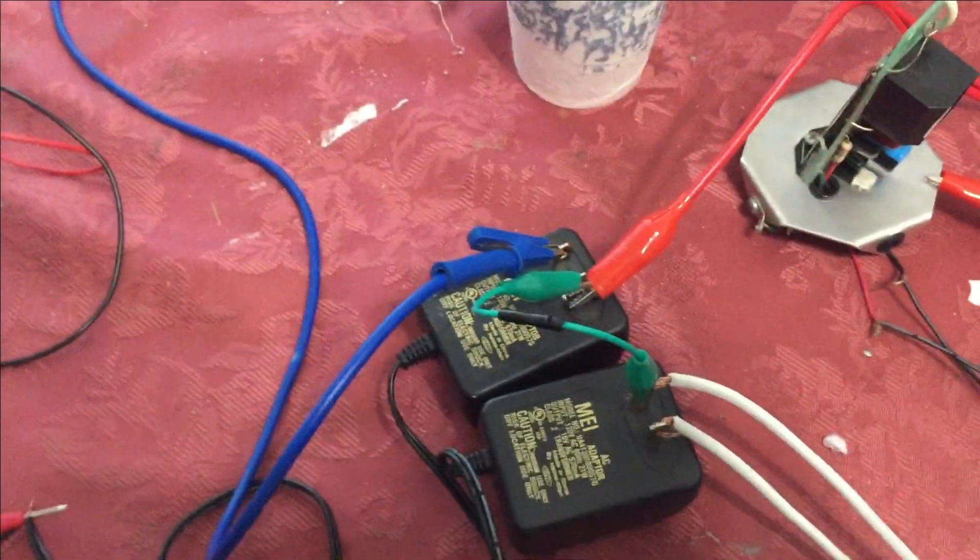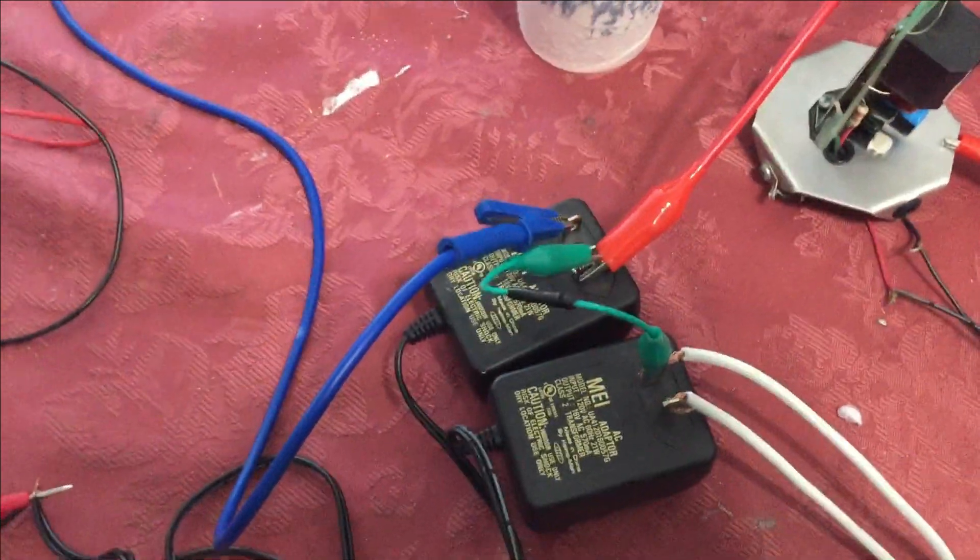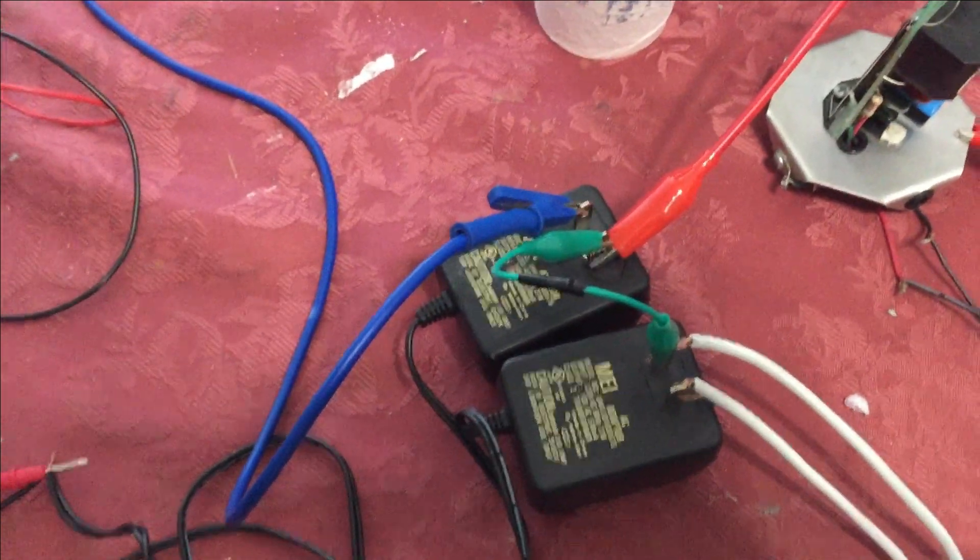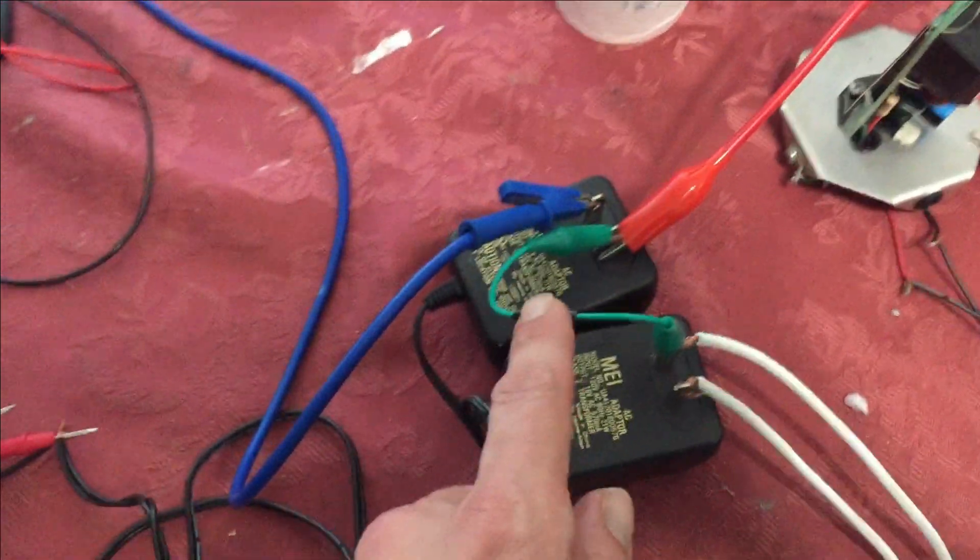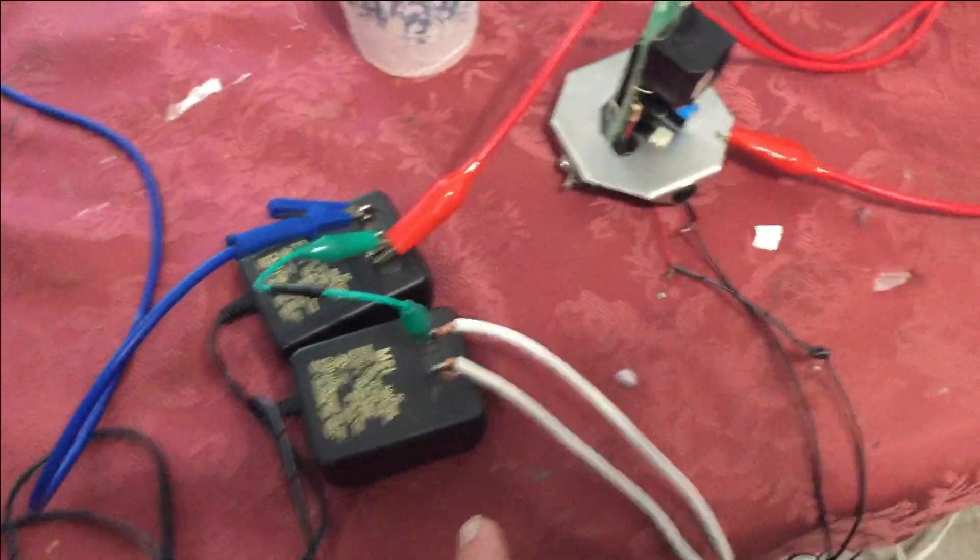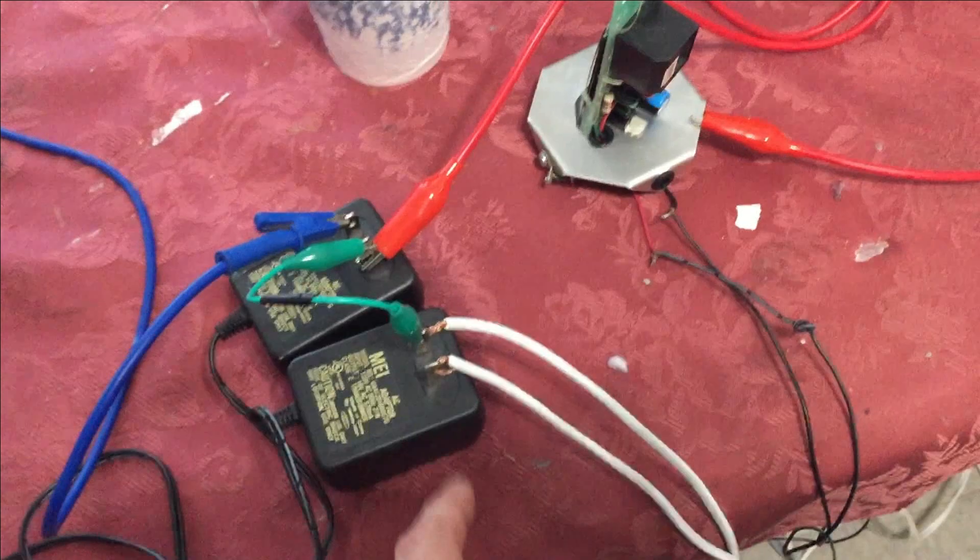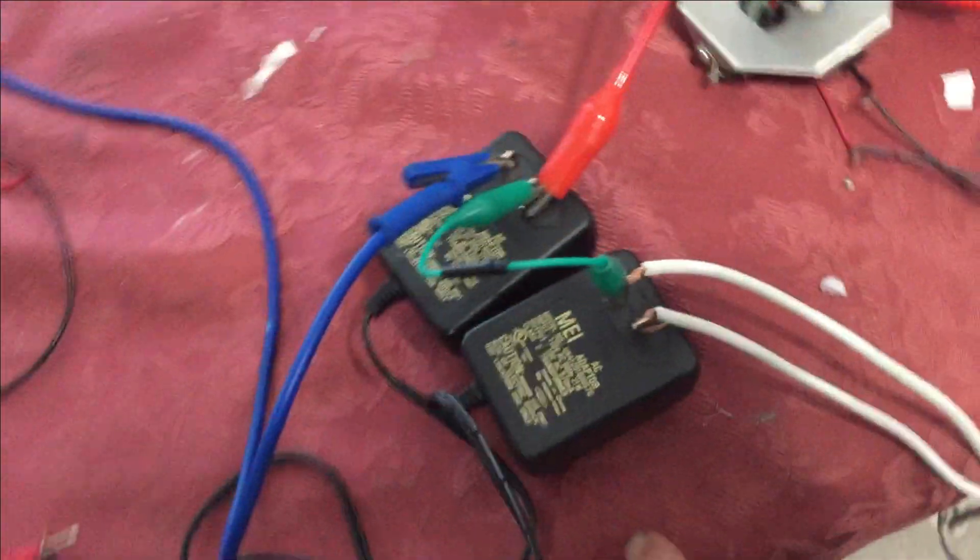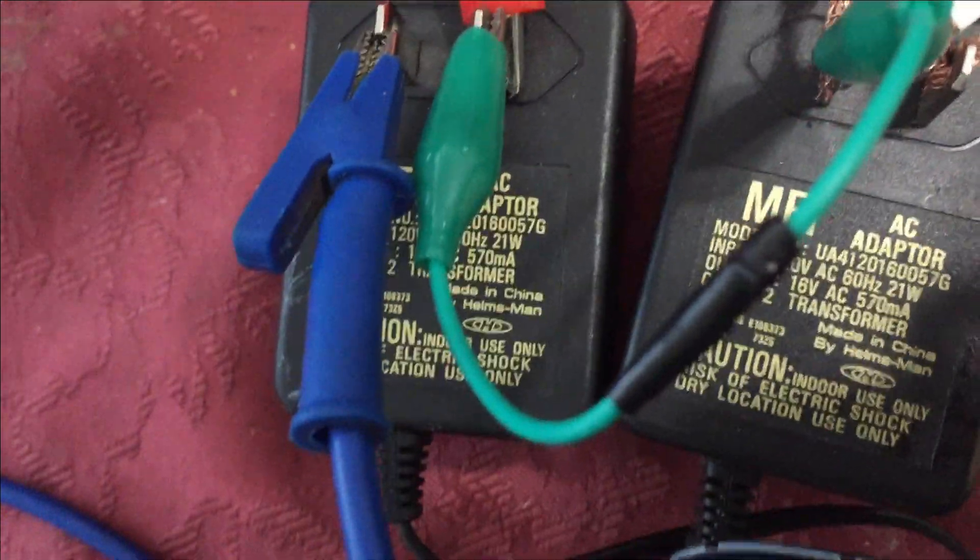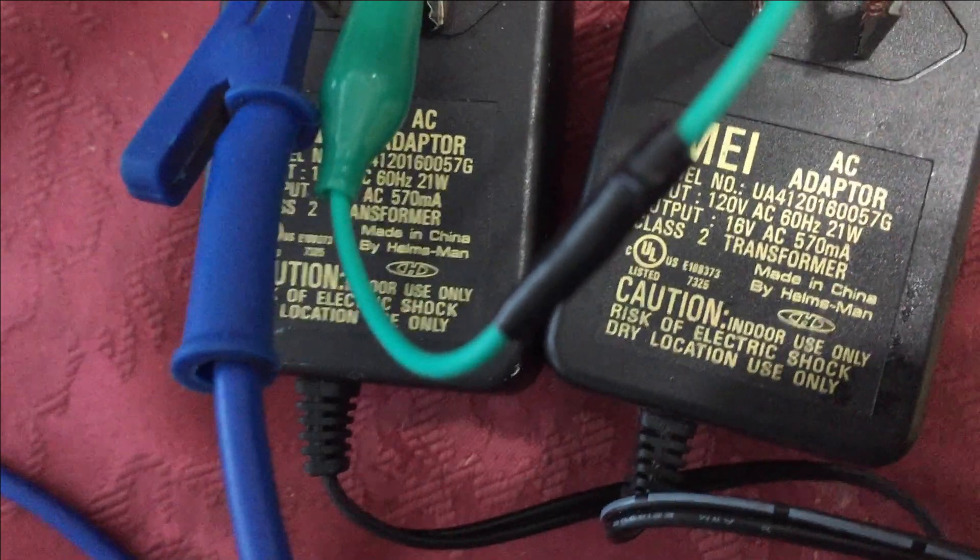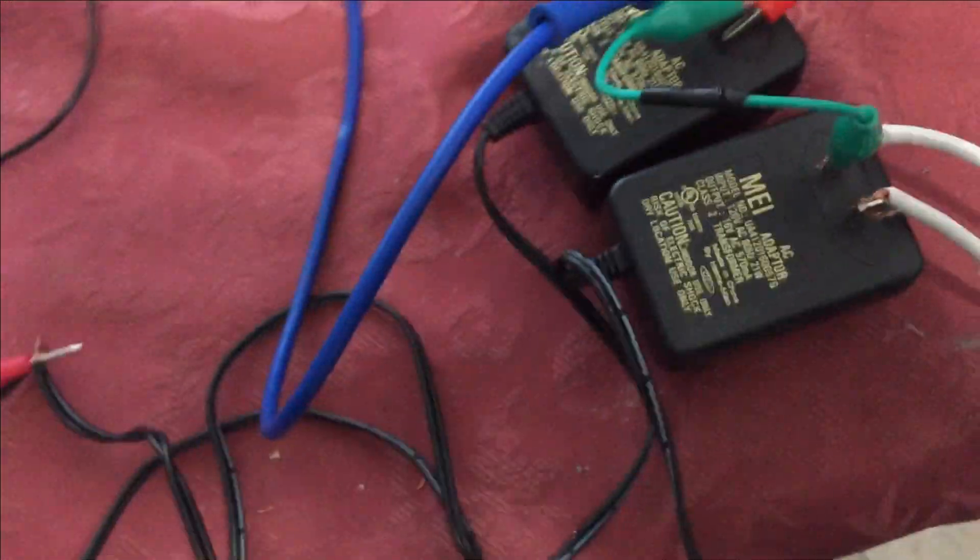So the output what I've done is I connected two AC transformers unfortunately they're just 16 volts but it proves the concept. So I've put the center tap basically here and I got one side which goes directly from the inverter. I got the inverter right down here connected to my 12 volt battery here and it's direct.